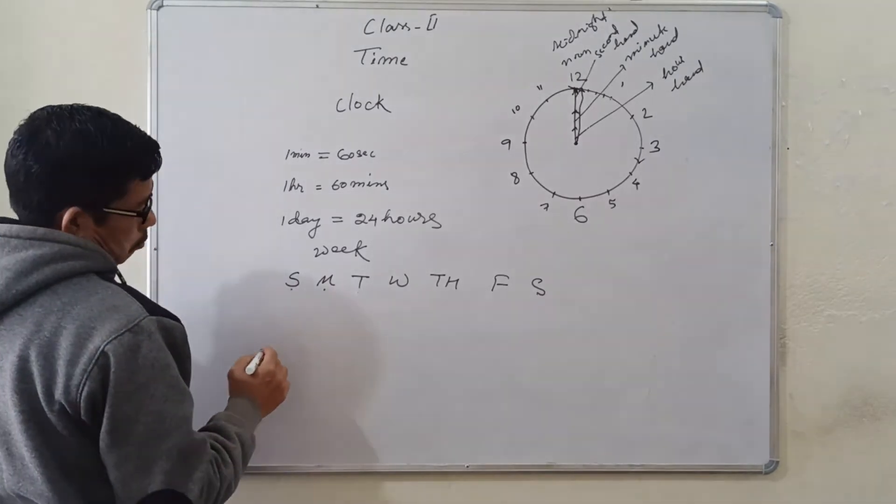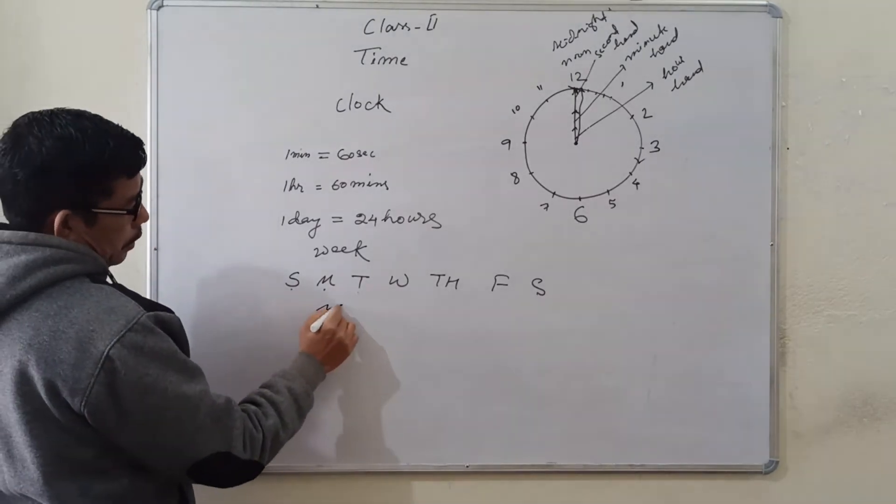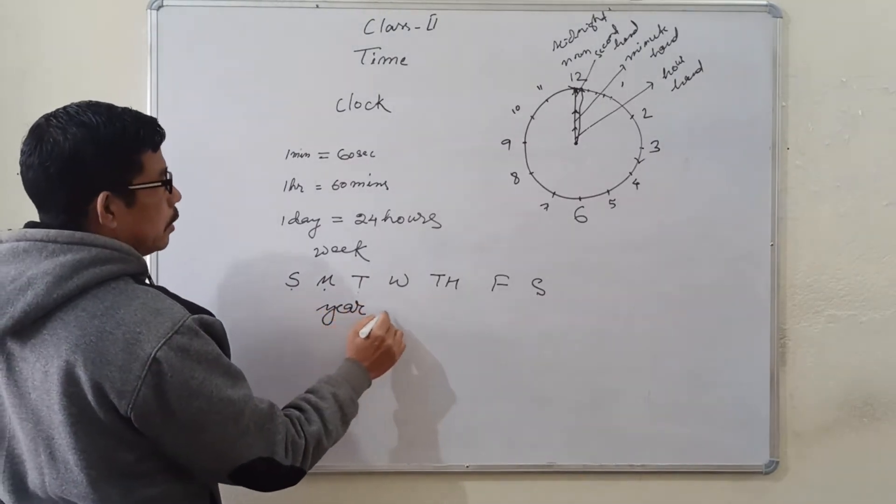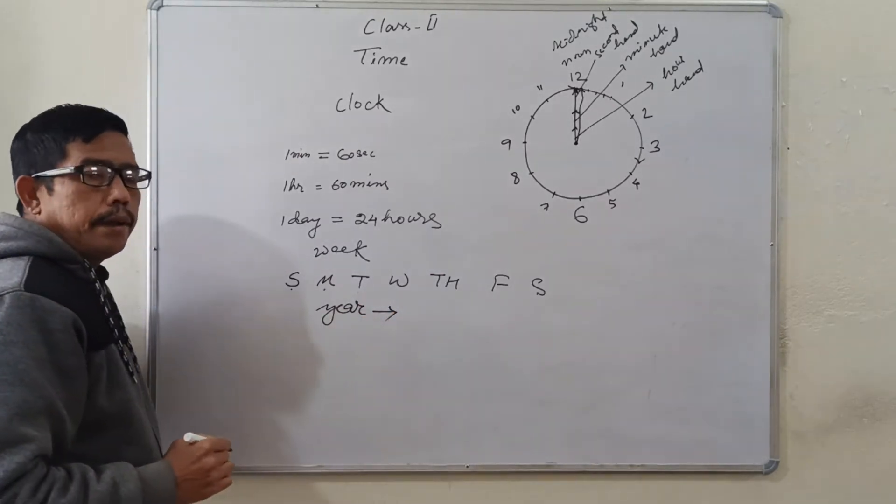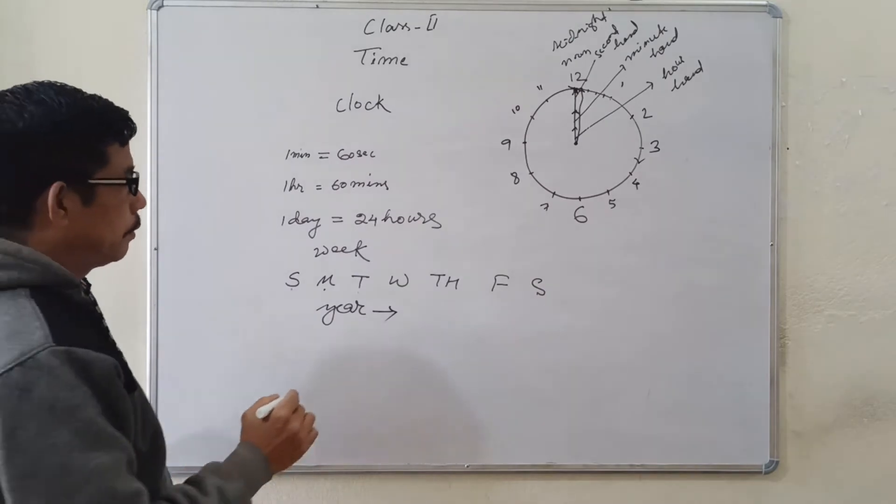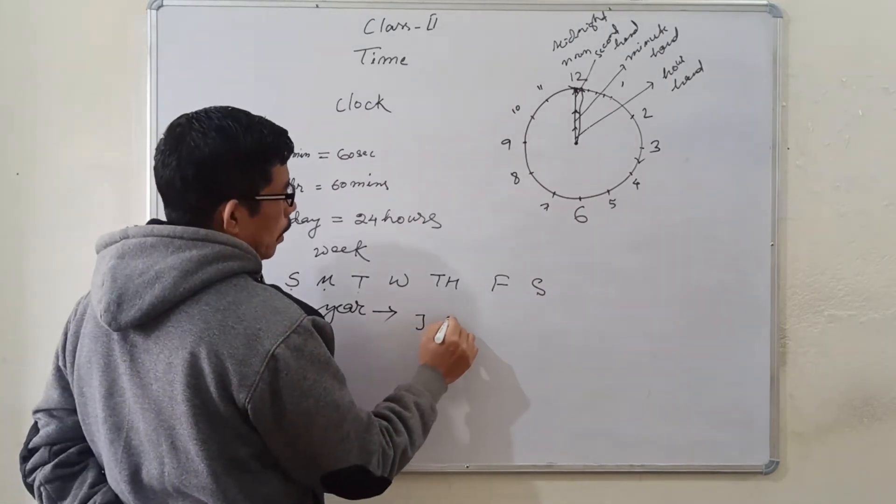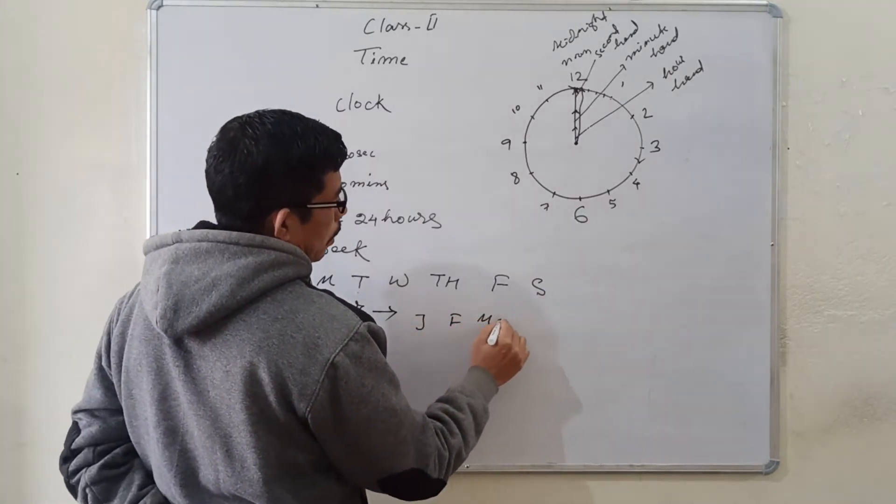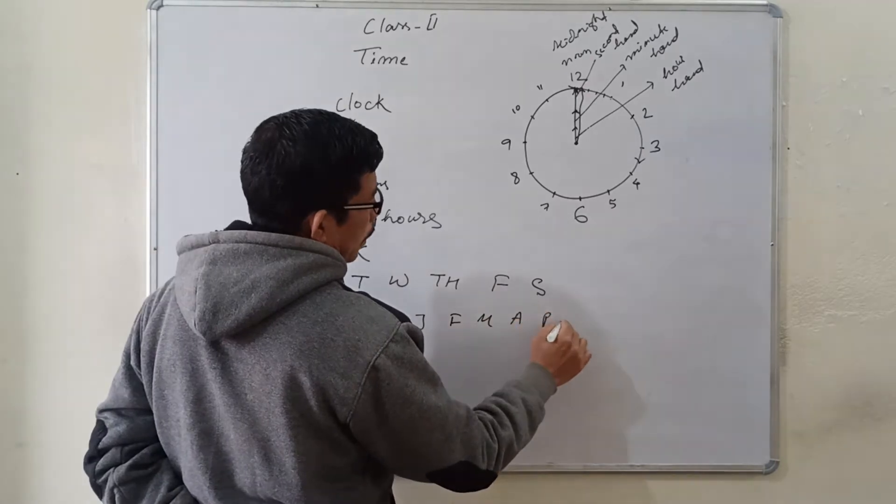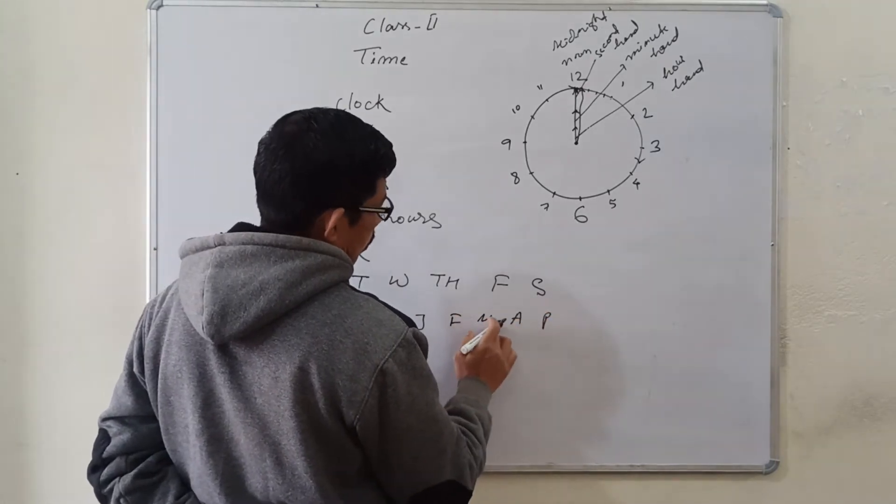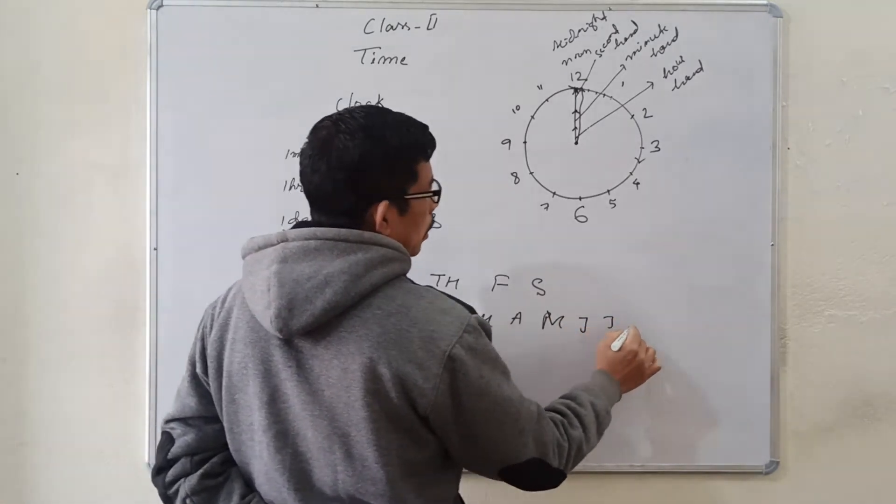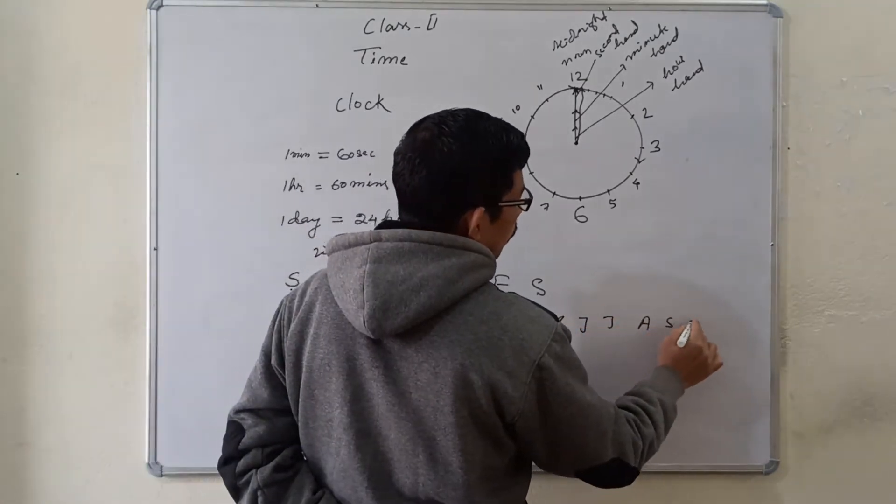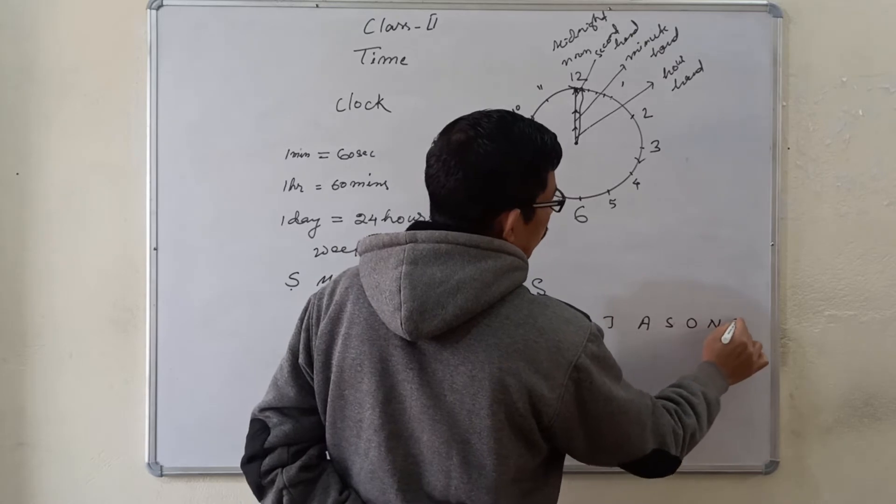And then, let's come to year. A year is made by 12 months. First one, January, February, March, April, May, June, July, August, September, October, November, December.